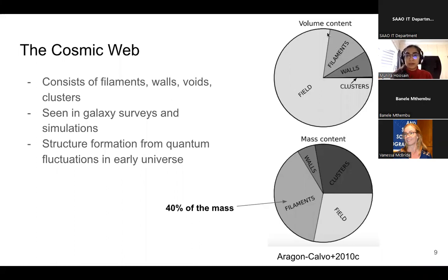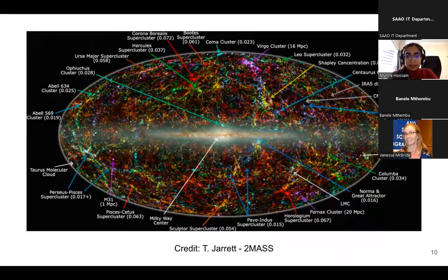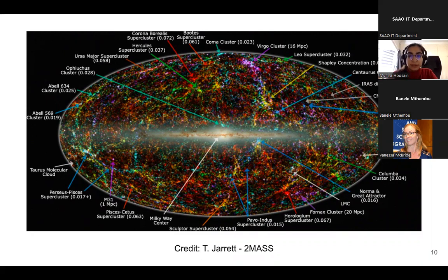Even though clusters occupy a relatively small volume, they contain a large fraction of the mass content. Similarly, filaments, even though they are quite tenuous, contain 40% of the mass of the universe, making them a rather interesting and somewhat understudied environment until very recently. Here you can see an example of some large-scale structure observed using data from the 2MASS survey, with the Virgo cluster and the Coma cluster visible, as well as some of these filaments.